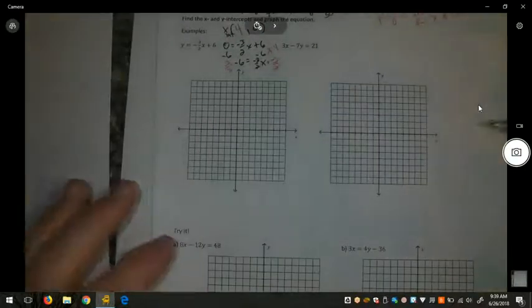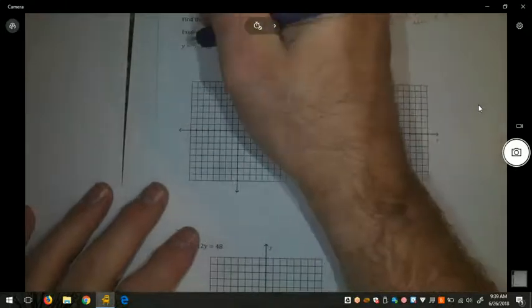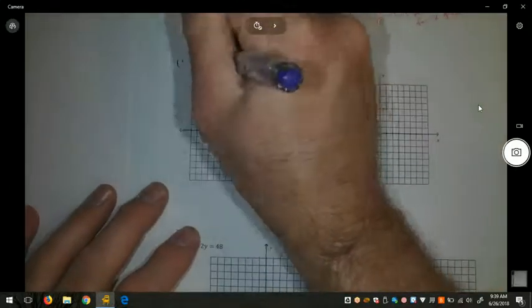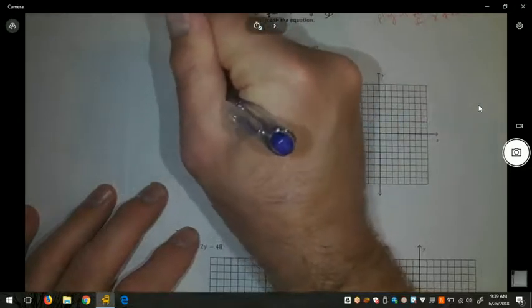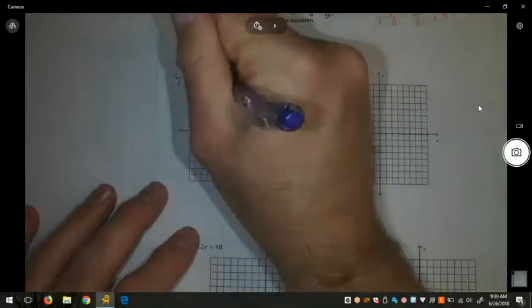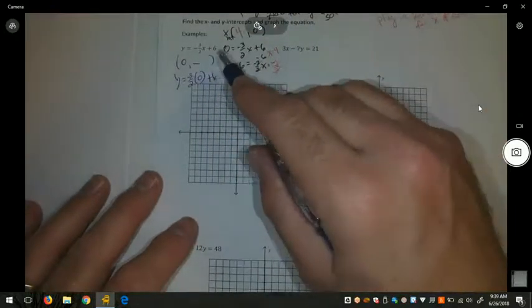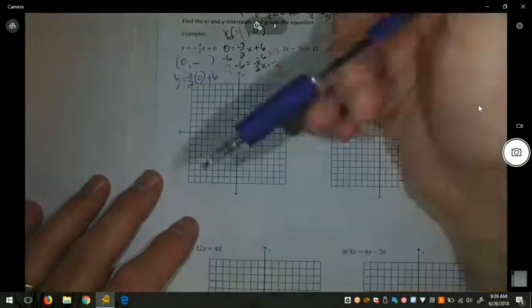Next, we're going to find the y-intercept. The y-intercept is a little easier to find for this problem. We're going to plug in 0 for x. So y equals negative 3 halves times 0 is 0, plus 6. Well, this equation is in slope-intercept form, so we should have already known that the y-intercept was 6.